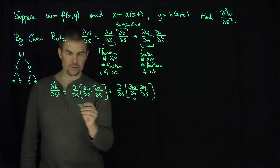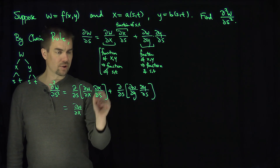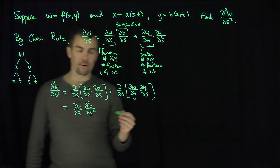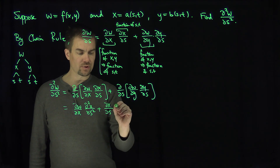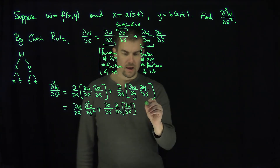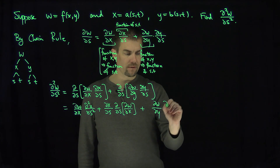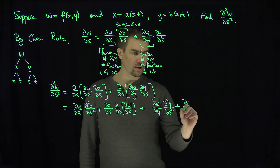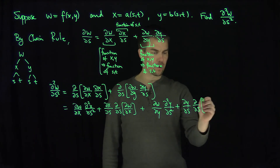Now applying the product rule: the first term gives (∂w/∂x)(∂²x/∂s²) plus (∂x/∂s) times the s-derivative of (∂w/∂x), leaving that derivative temporarily. The second term gives (∂w/∂y)(∂²y/∂s²) plus (∂y/∂s) times the s-derivative of (∂w/∂y).